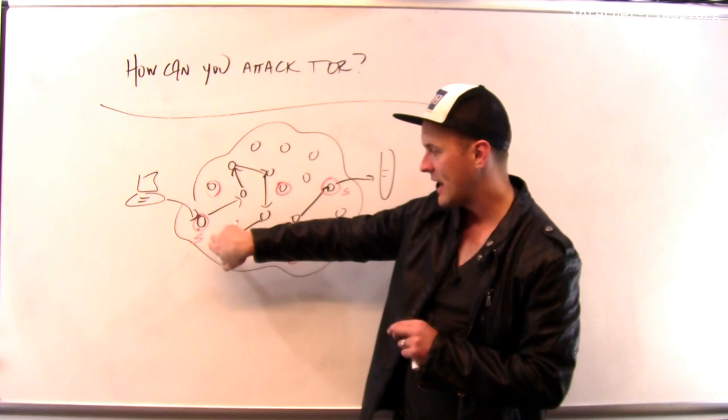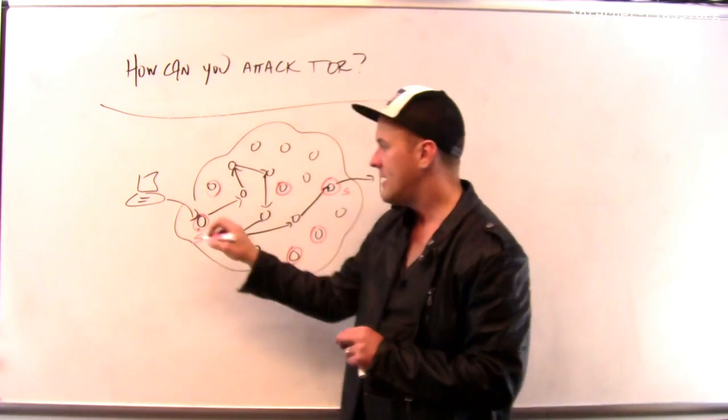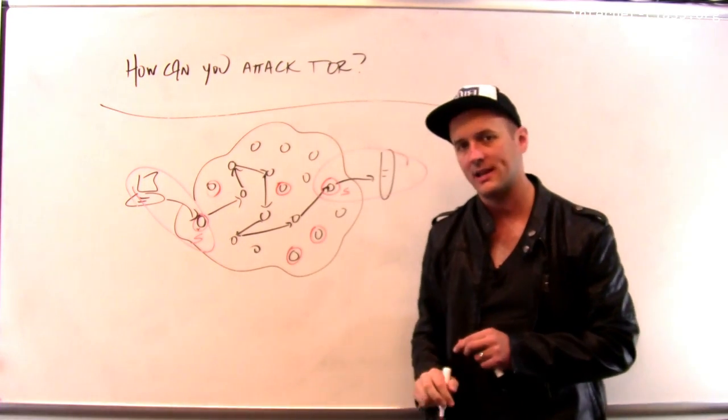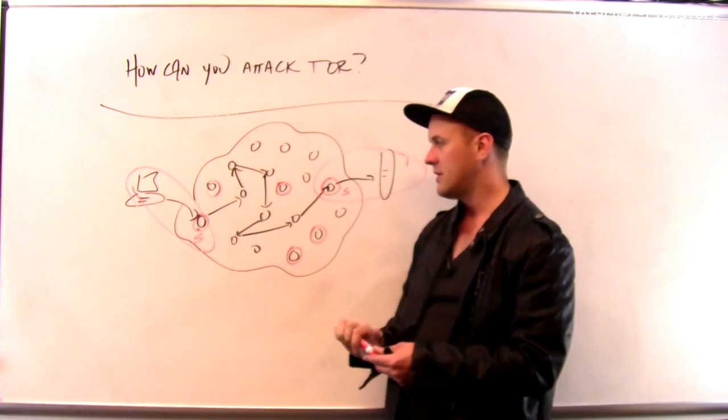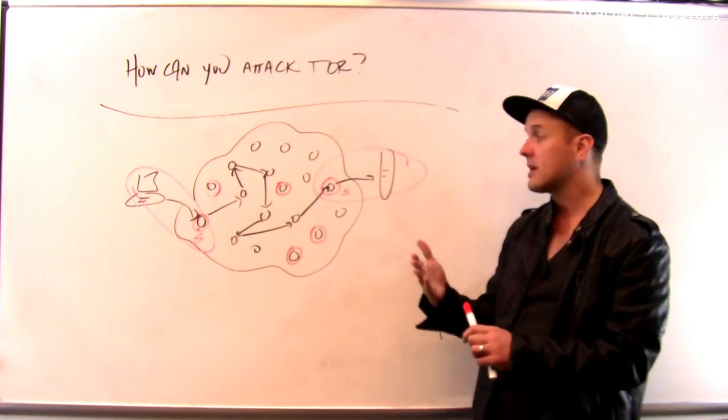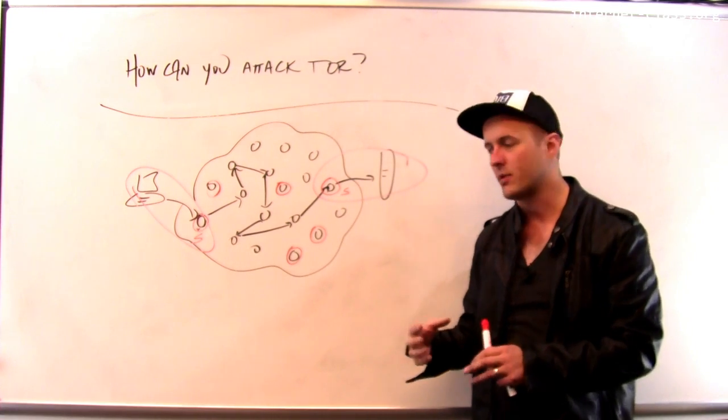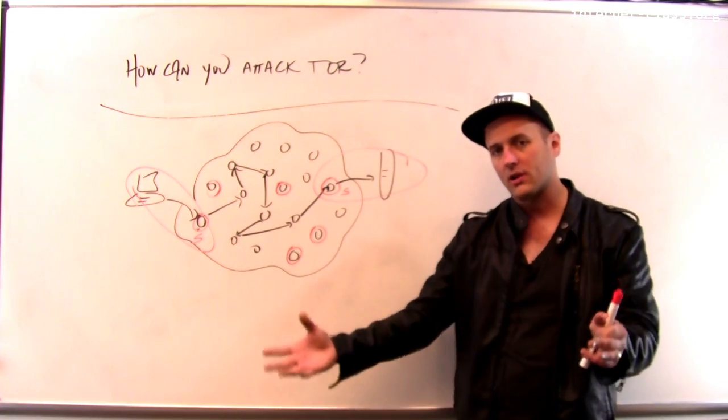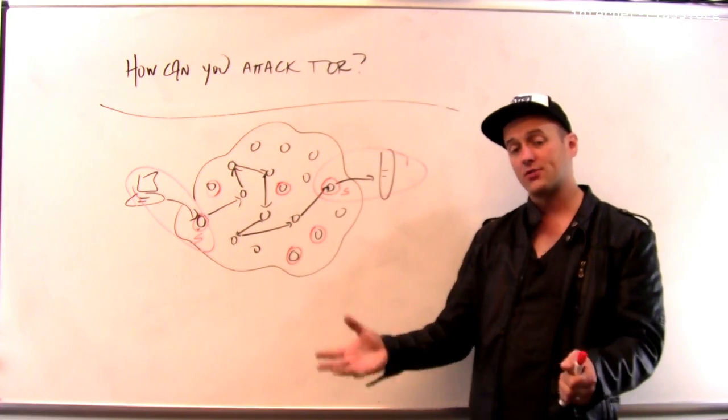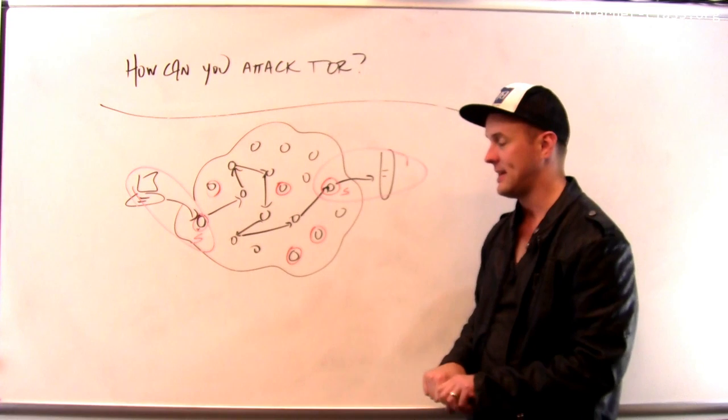If the attackers then see that packet leave the network, so if I happen to have both the start of the circuit and the end of the circuit, then I can connect this packet with its destination. And that's exactly what I don't want to happen. Any distributed system like this, particularly peer-to-peer systems, are vulnerable to these types of attacks where I try to take over large parts of the network, establish reputation, and frequently if I have control over enough nodes, an attacker can launch an attack like this.